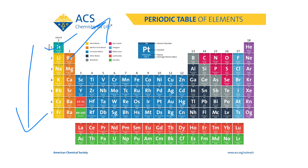The 16th group elements are called the oxygen family, and they are also called chalcogens — named after copper, as 'chalcos' is the old name for copper. The ores of copper present in the earth's crust are mostly oxides or sulfides, and with traces of selenium, that is why they are called the oxygen family or chalcogens.